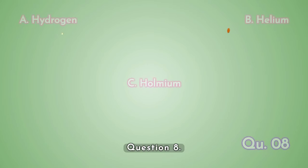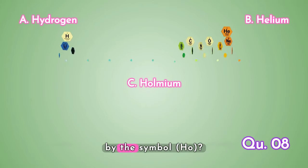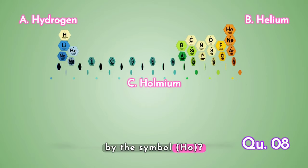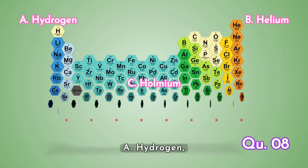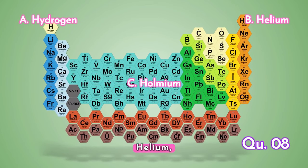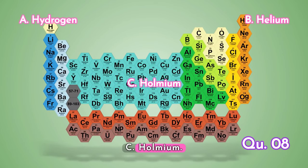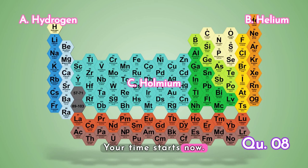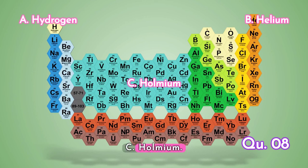Final one, question 8. Which element is represented by the symbol Ho? A, hydrogen. B, helium. C, holmium. Your time starts now. The answer is C, holmium.